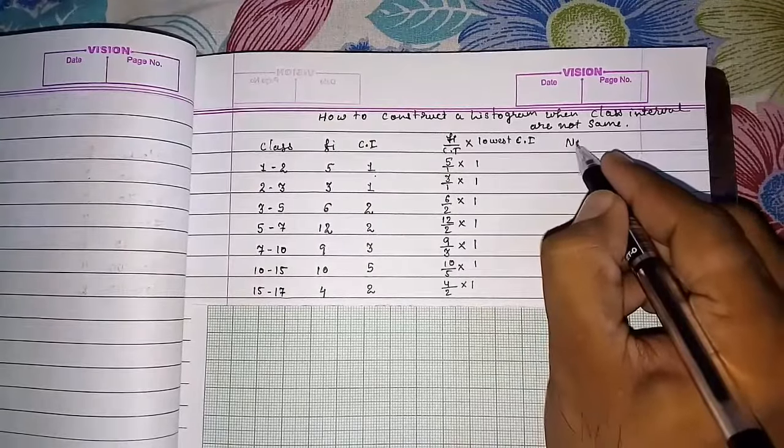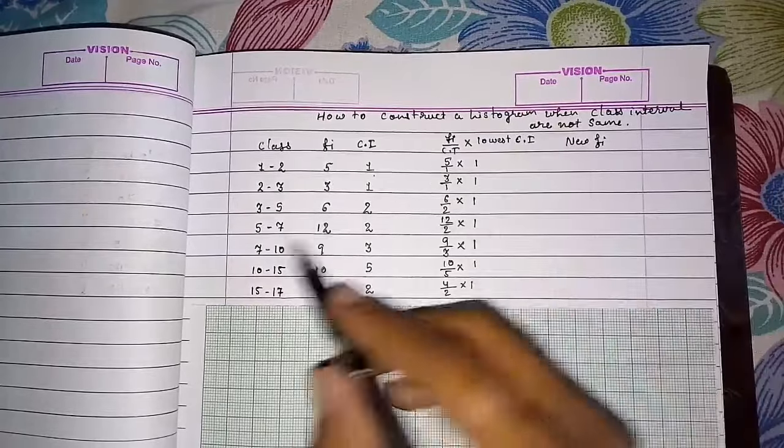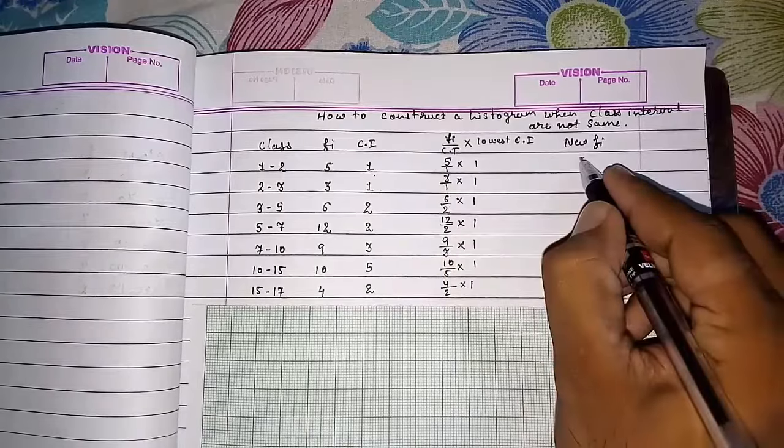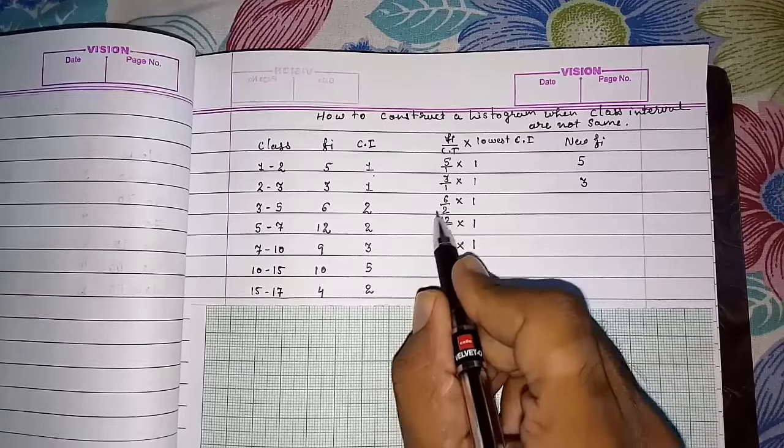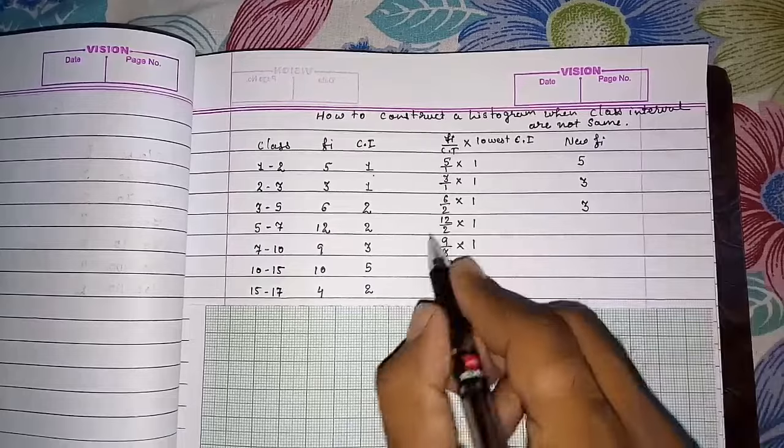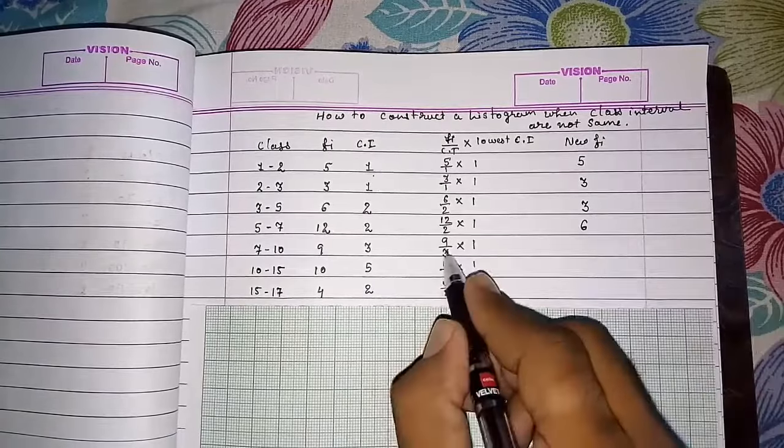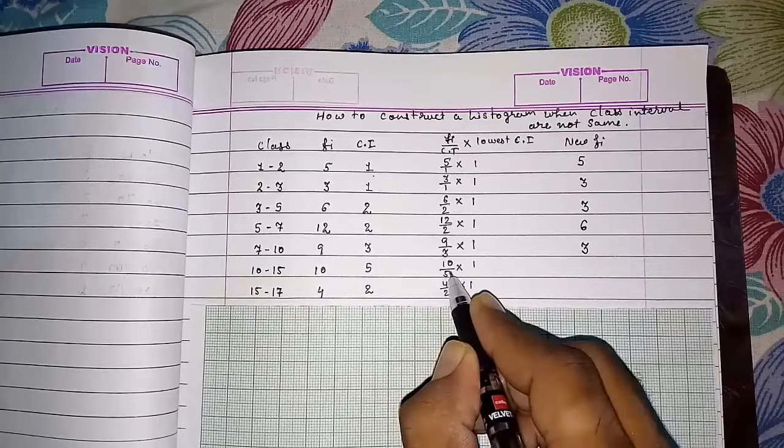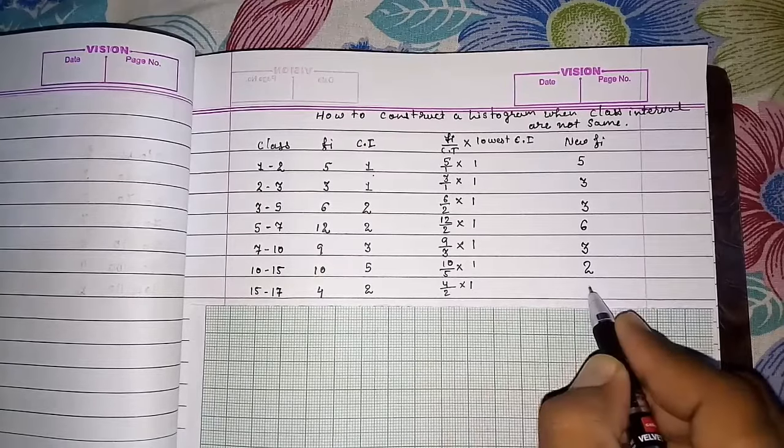So we will get new frequency. This will be the true frequency for this class. So 5 by 1 into 1, you will get 5 only. 3 by 1 into 1, you will get 3. Now 6 by 2, we can cancel it, and we will get 3 into 1, which is 3. 12 by 2 will be 6 into 1, so 6. 9 by 3 will be 3. 10 by 5 will be 2. 4 by 2 will be 2.